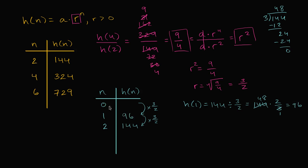And so if we want to figure out h of 0, we just divide by 3 halves again. So h of 0 is 96 divided by 3 halves, which is equal to 96 times 2 over 3. 96 divided by 3 is going to be 32, so this is going to be 32 times 2, which is equal to 64. And so just like that we figured out that a is equal to 64.